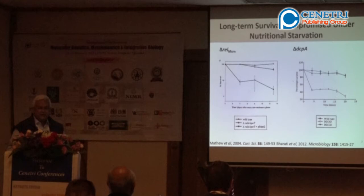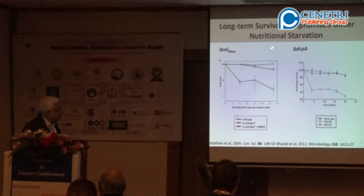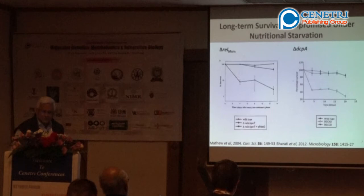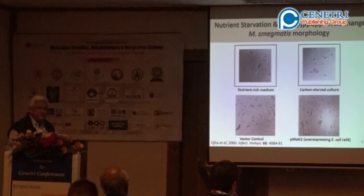Our first interest was to find out whether Mycobacteria shows a stringent response or cyclic-di-GMP response. We knocked out the gene by homologous recombination, made a complemented strain and a knockout strain, and showed the survival rate is very much compromised. Under nutrient starvation, ppGpp levels change. In the year 2000, we showed that under starvation there is a change in morphology, and if you overexpress the gene, the morphology reverts. The morphology change indicates a change in the cellular membrane and lipid components.